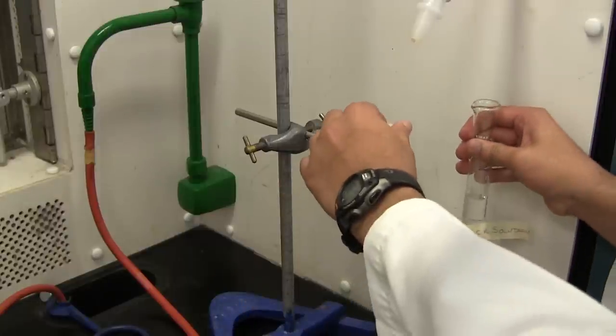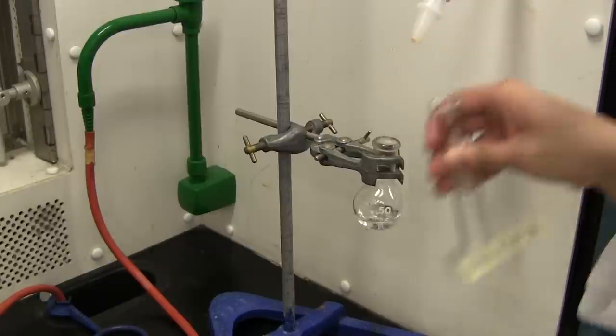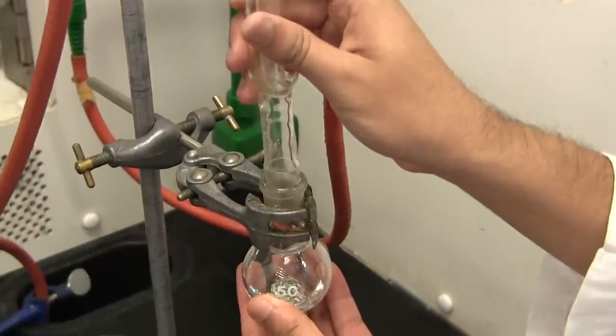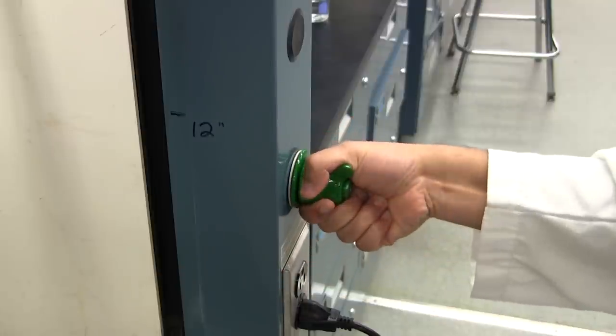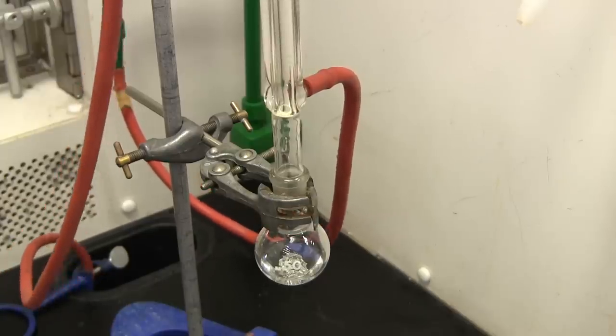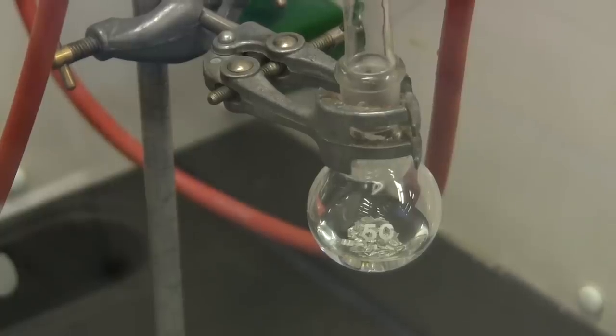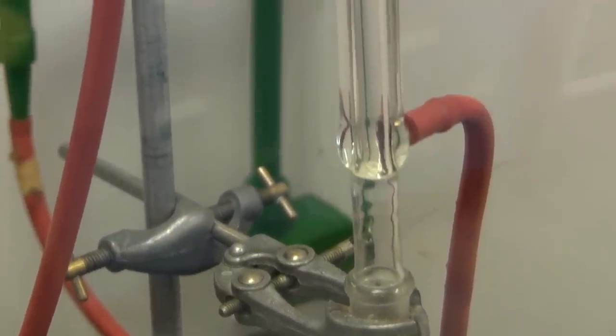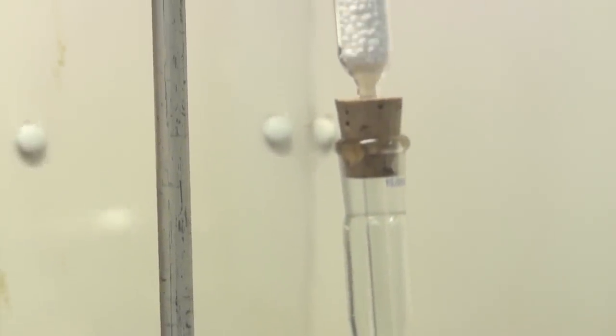Once you have both solutions prepared, transfer the stock solution into the round bottom flask and quickly attach the condenser to it. At this point, you should start the water flow. Here is the experimental setup that will be used for the preparation of the Grignard reaction. The round bottom flask will be the site of reaction. The condenser will ensure that all the volatiles can be reused in the mixture and the drying tube has been employed such that no moisture is incorporated in the reaction.